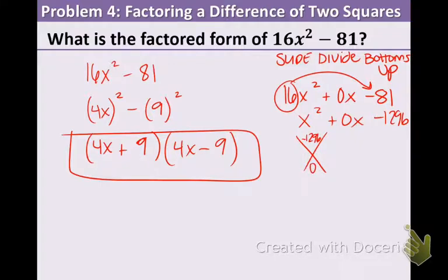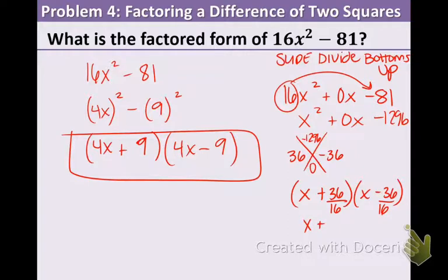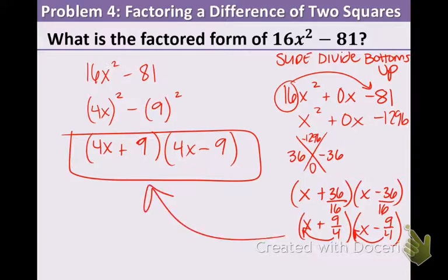I know this is a big number, but basically you just have to take the square root. So put the negative 1,296 up there, the 0 down there. The square root of that number is 36. And in order to add to get 0, you must have a positive 36 and a negative 36. So you take those and put them in the parentheses. Now we have to divide by the number we slide. So divide by 16 and reduce. So that gives us 9 fourths. And the last thing is bottoms up. And we find out that we get the exact same thing as the other method. 4x plus 9 times 4x minus 9.